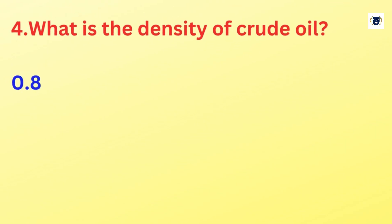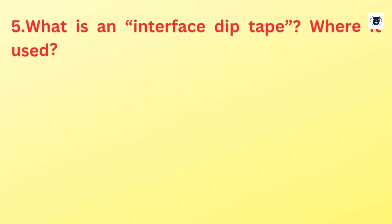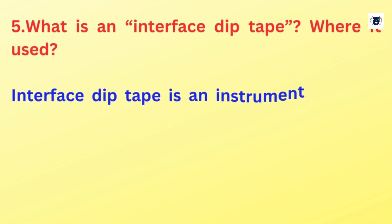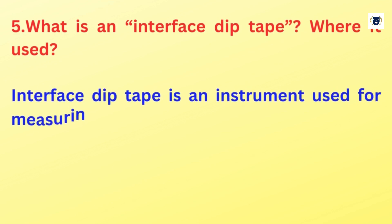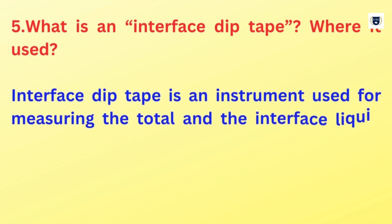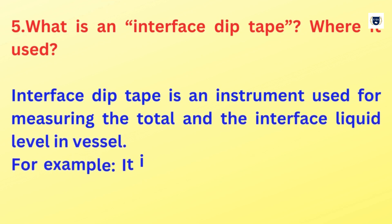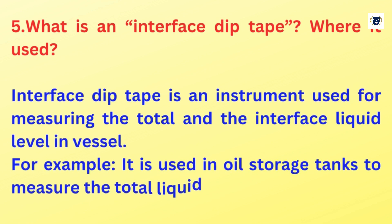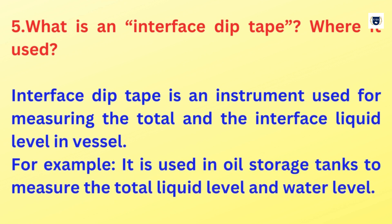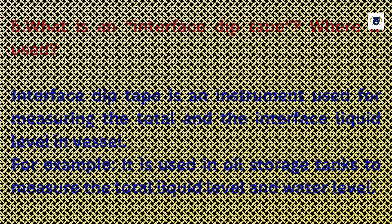What is the density of crude oil? 0.8. What is an interface dip tape and where is it used? An interface dip tape is an instrument used for measuring the total and the interface liquid level in a vessel. For example, it is used in all storage tanks to measure the total liquid level and water level.